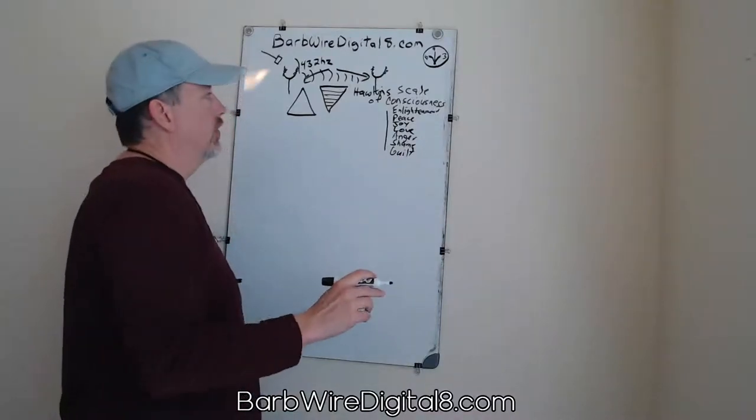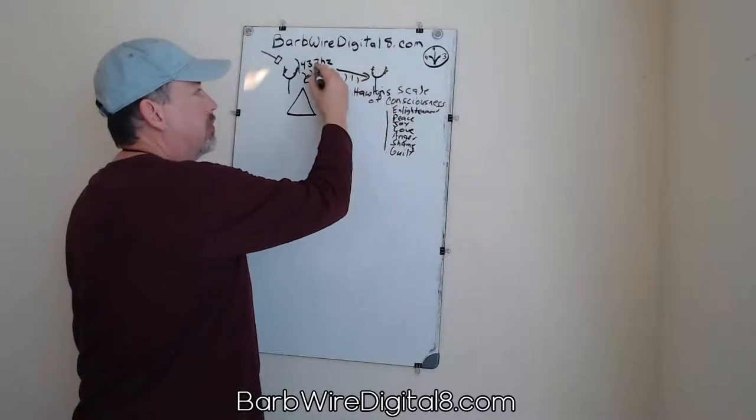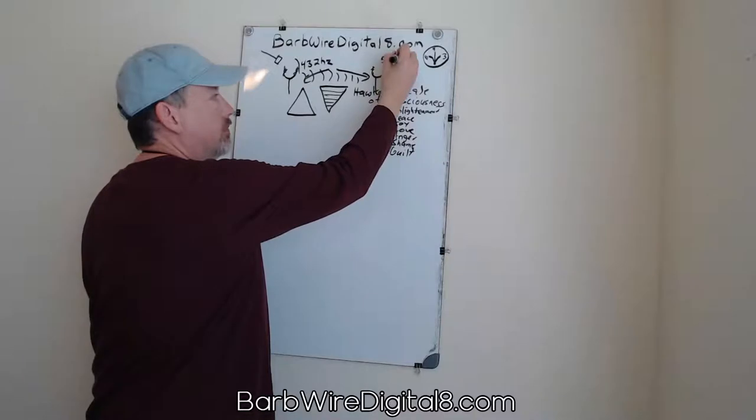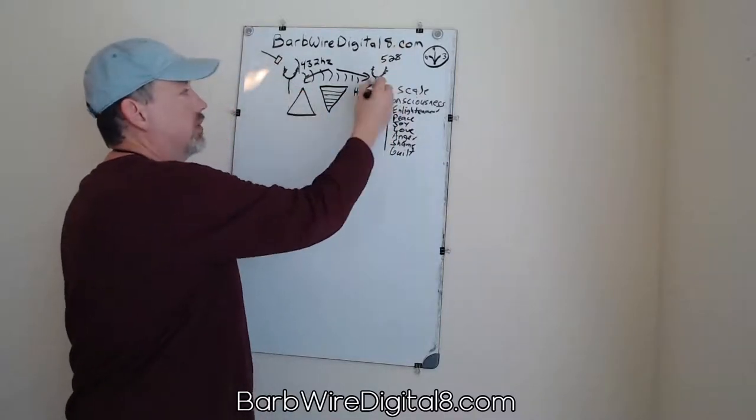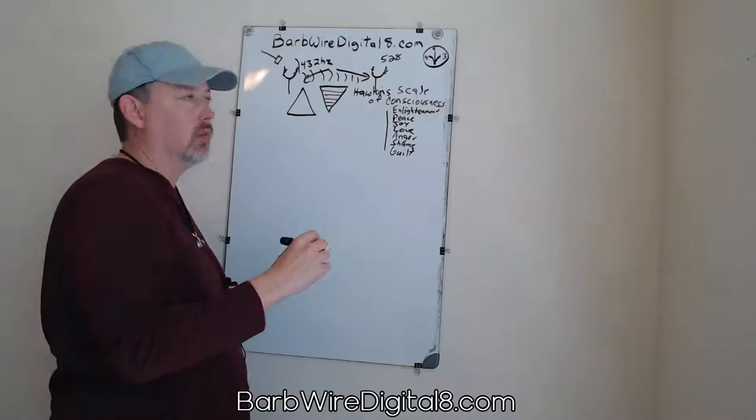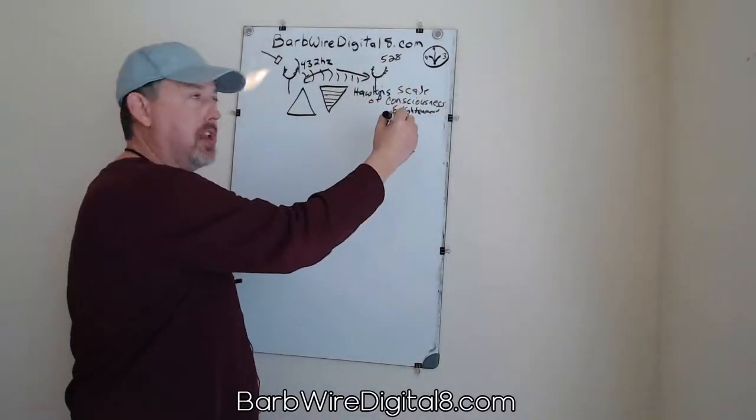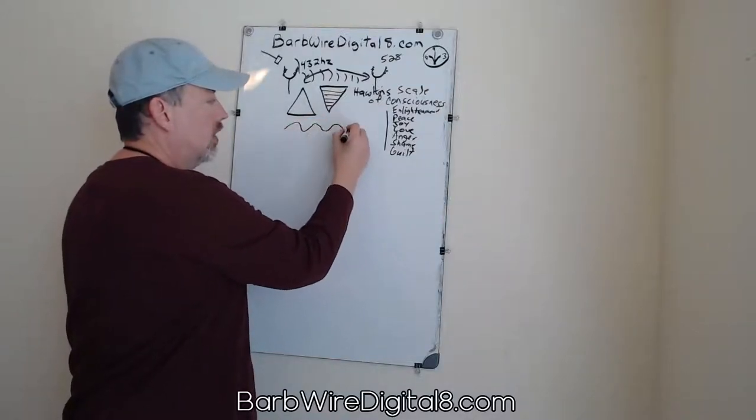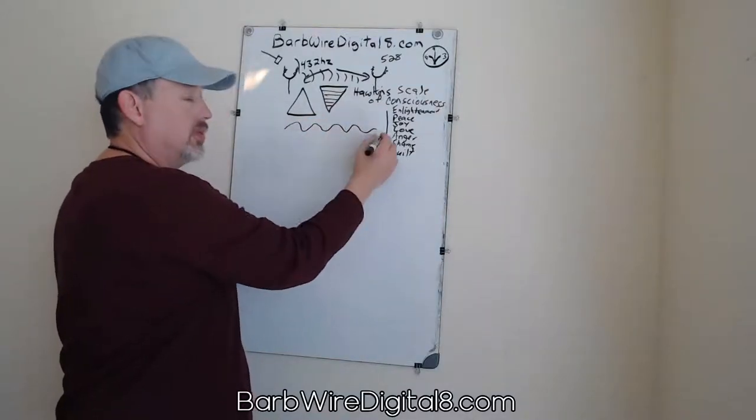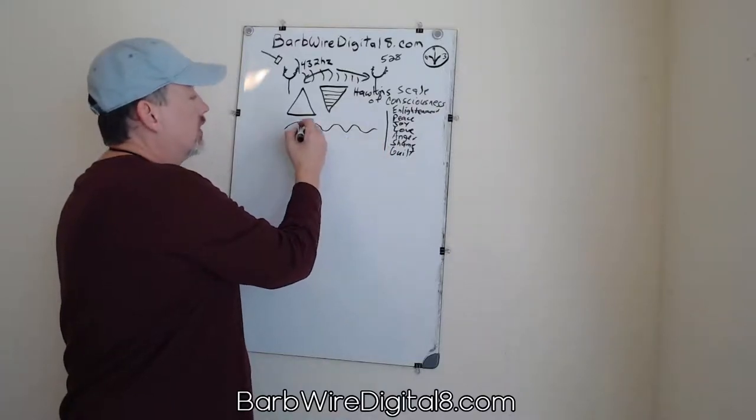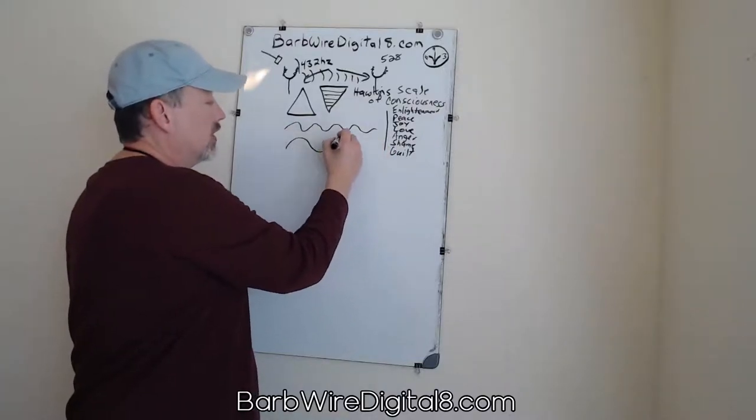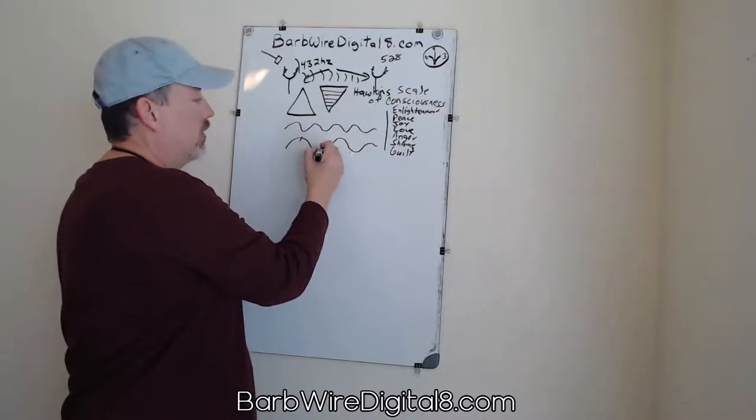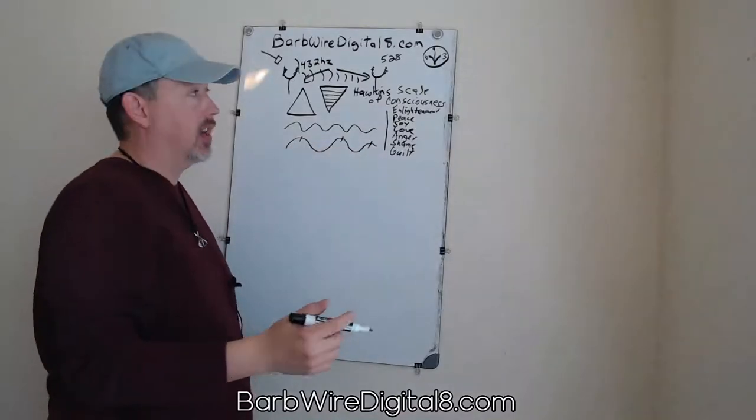Here's what happens. If this tuning fork, let's say instead of it being 432 like this one, let's say this one's 528, and you strike this tuning fork over here, this one won't vibrate, or if it does it'll vibrate a little bit for a minute because the waves cross each other. Obviously a wave is a sound wave. If this was 432, then the 528 fork would be something like this.